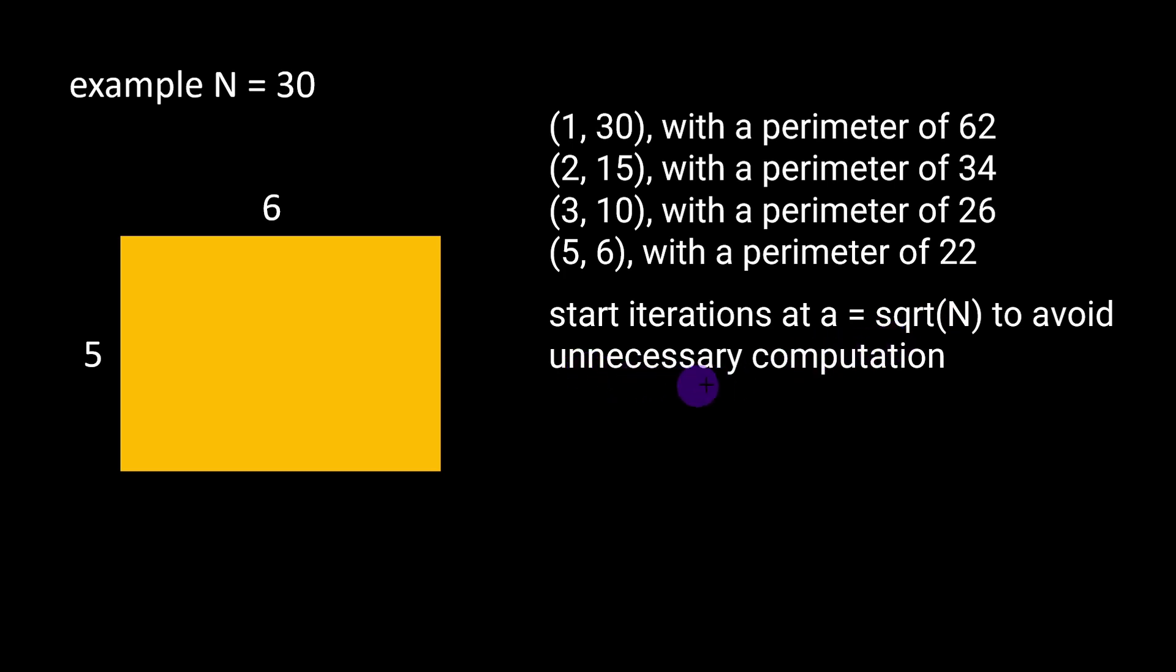After this value we are repeating almost the same computation operations which are unnecessary. In this case, for example, after A equal to 5 where we had 5 times 6 equal 30, if I increment 5 it would become 6 and then I would have 6 times 5 equal 30. Then if I increment even more I'm going to reach 10 where we have A modulus equal 0, so 10 times 3 equal 30.